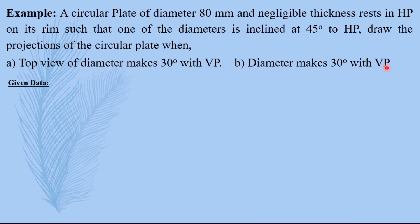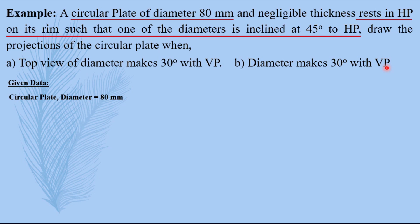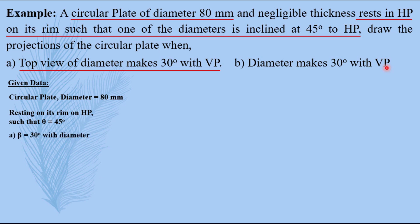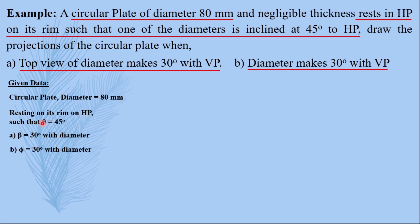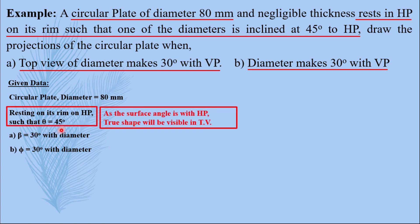Let us write down the given data. Circular plate of diameter 80 mm, resting in HP on its rim such that one of its diameters is inclined at 45 degrees to HP. This gives us resting position in HP and theta equals 45 degrees. Top view of diameter makes an angle of 30 degrees means beta equals 30 degrees, and second condition diameter makes 30 degrees with VP means phi equals 30 degrees. Since the angle with the surface is with HP, the true shape will be visible in the top view.